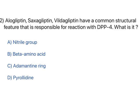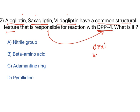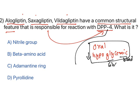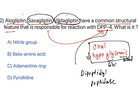Another example: 'Alogliptin, saxagliptin, and vildagliptin have a common structural feature responsible for reaction with DPP-4. What is it?' All three drugs are oral hypoglycemic agents — agents that reduce blood glucose levels in diabetes mellitus. DPP-4 stands for dipeptidyl peptidase 4, an enzyme that is inhibited by these three drugs.